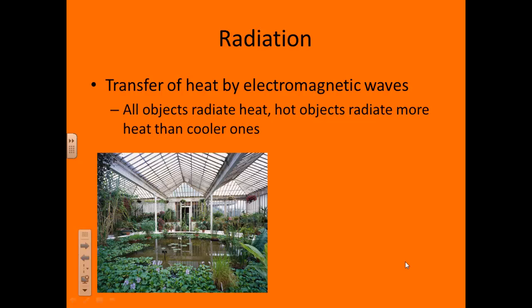Radiation is a third way that heat flows from one object to another. Radiation is the transfer of heat by electromagnetic waves. All objects radiate heat, and hot objects radiate more than cool ones. The part of the electromagnetic spectrum that is often related to heat is infrared radiation.